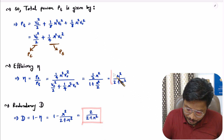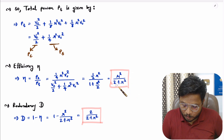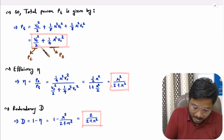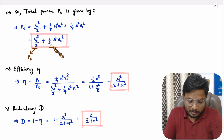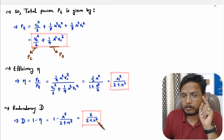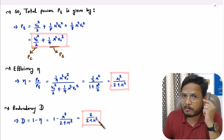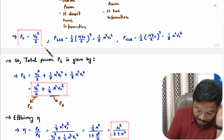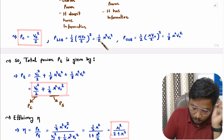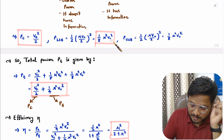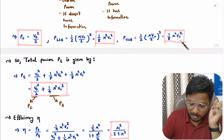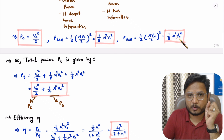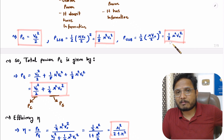To summarize the essential equations: total power PT = VC²/2 + (1/4)μ²VC²; efficiency η = μ²/(2 + μ²); redundancy D = 2/(2 + μ²); carrier power PC = VC²/2; LSB power PLSB = (1/8)μ²VC²; USB power PUSB = (1/8)μ²VC²; and total sideband power PS = (1/4)μ²VC², which is the algebraic sum of PLSB and PUSB. Note these down, as they will be used to solve problems in future videos.